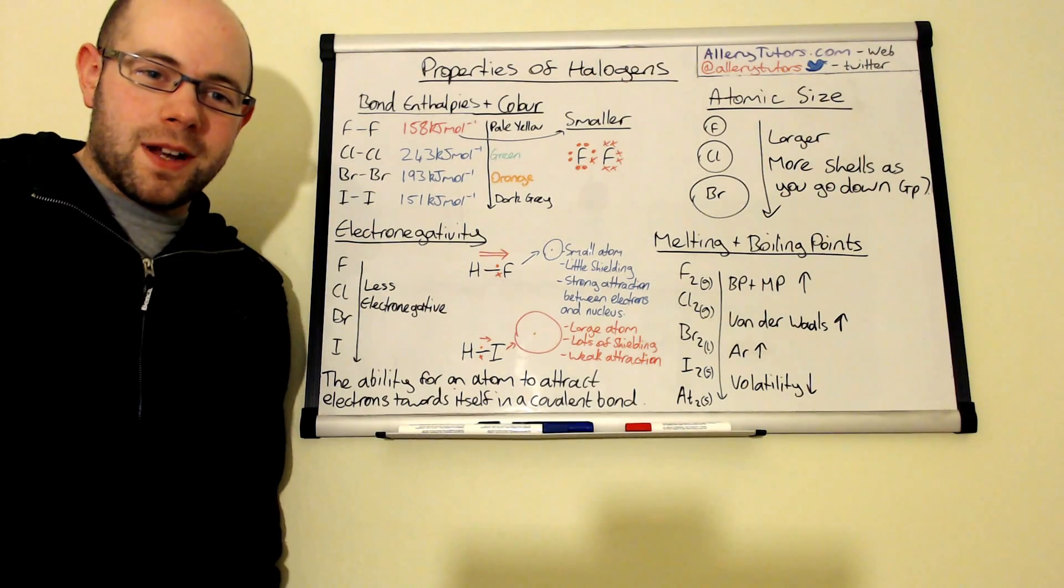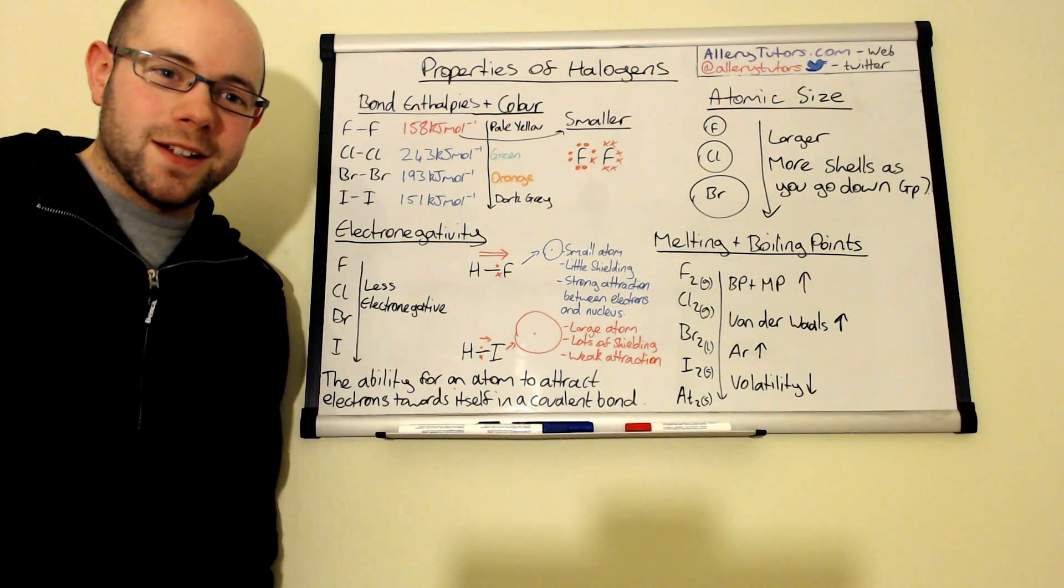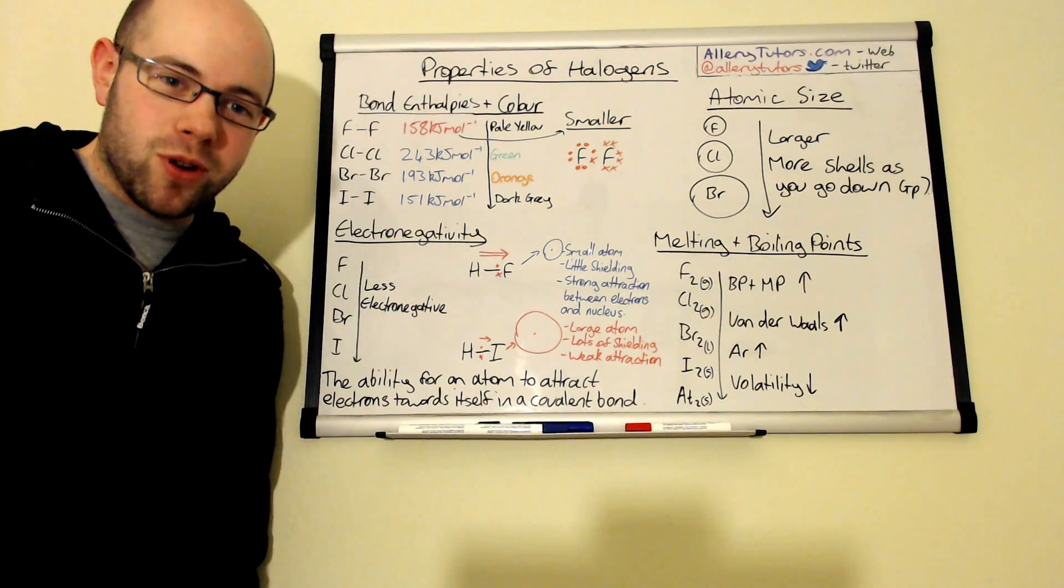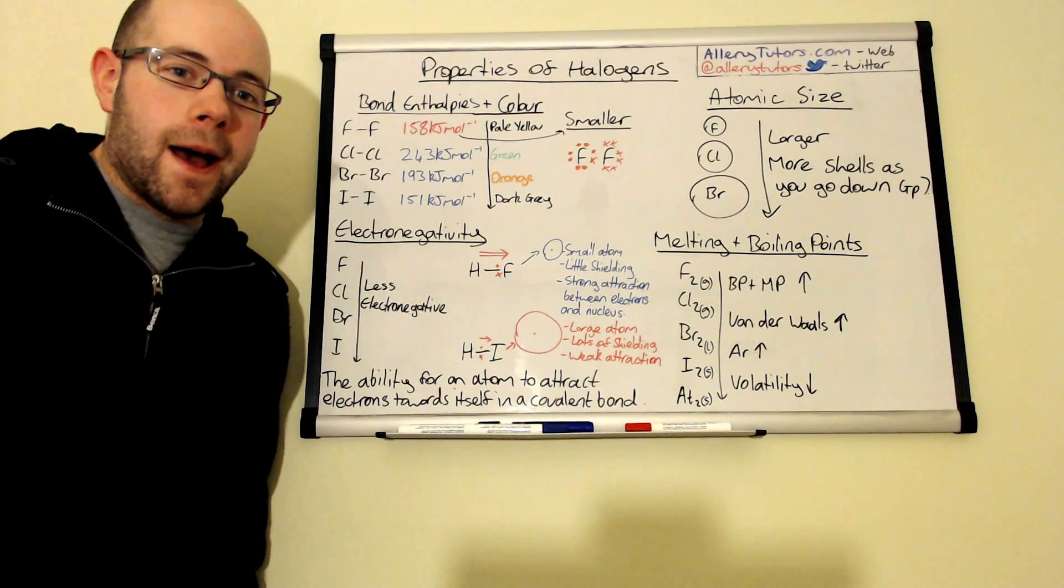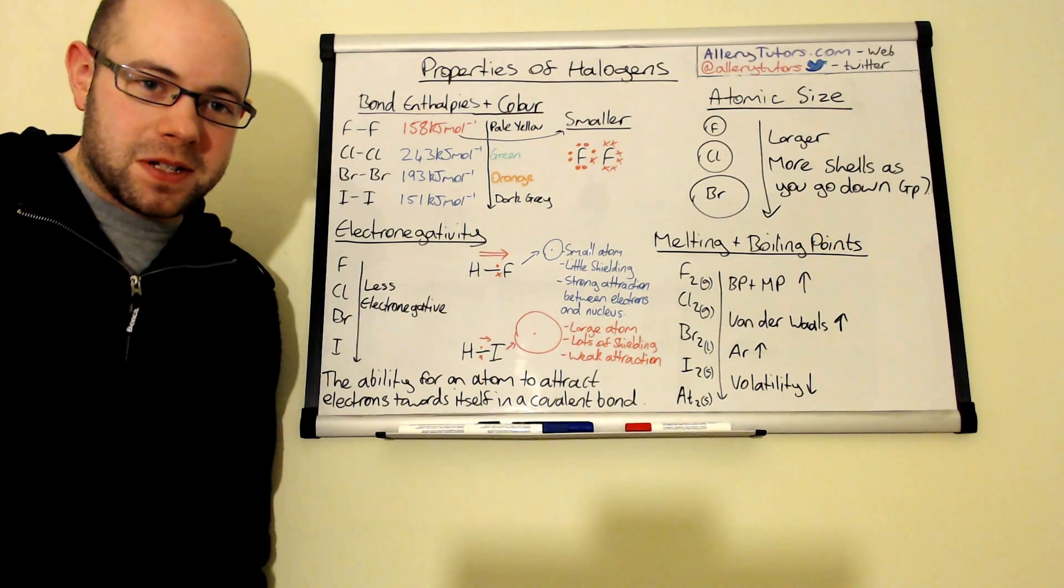Hi everybody, my name is Chris Harris and I'm from alimututors.com and in this video we're going to look at the properties of halogens and obviously the halogens are found in group seven of the periodic table.